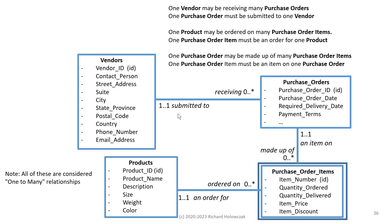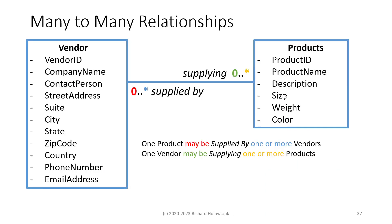These are all considered one-to-many relationships, and you will find that the vast majority of your relationships will be one-to-many. Now let's talk about many-to-many relationships. A vendor may be supplying many products, and a product may be supplied by many vendors — this is a many-to-many relationship based on the maximum cardinalities.